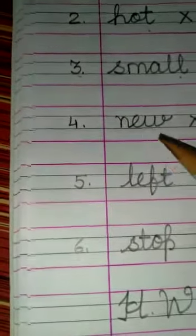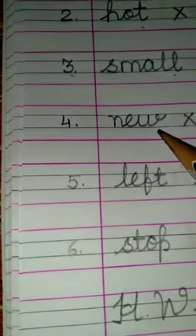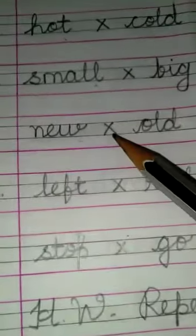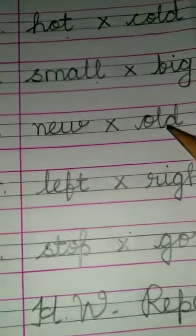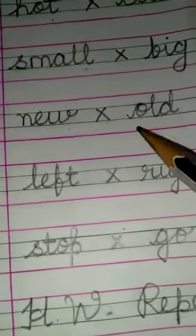Fourth one new N-E-W new. What will be the opposite of new? After giving opposite sign you will write old. Opposite of new will be old O-L-D old.